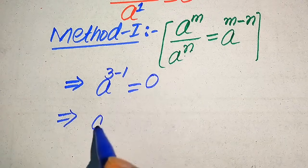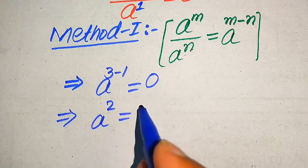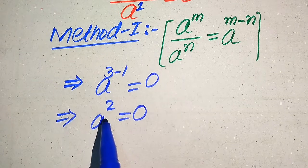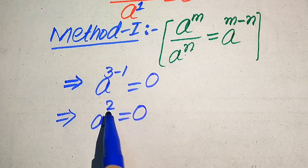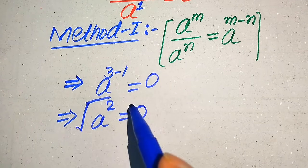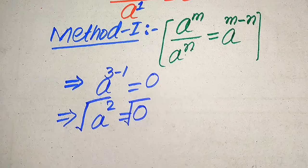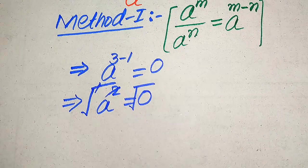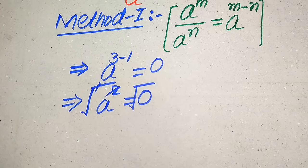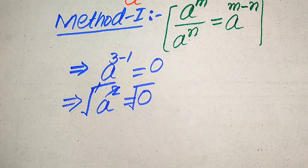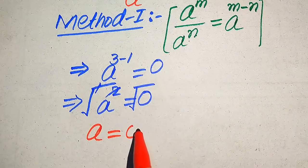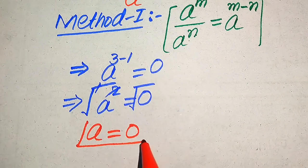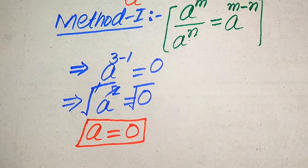So 3 minus 1 gives us a squared equals 0. In order to find the value of a, we need to remove the square sign, so we take the square root on both sides. The square root and the squared exponent cancel out, and we get a equals 0. Since the square root of 0 is 0, in the first method we get only one root.